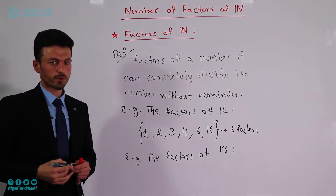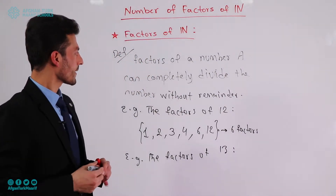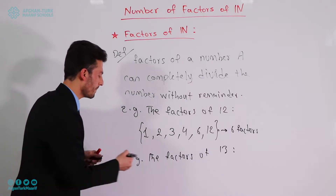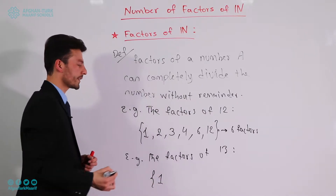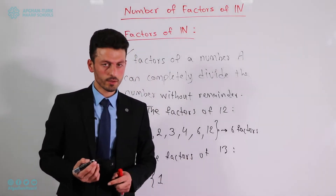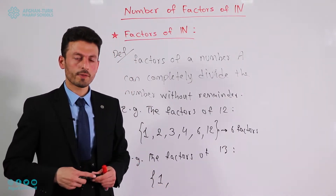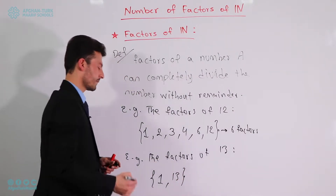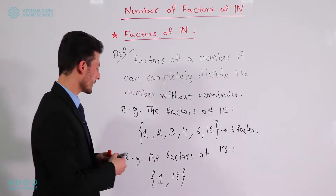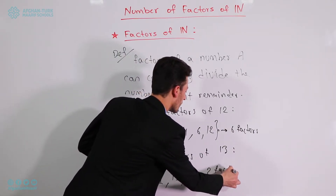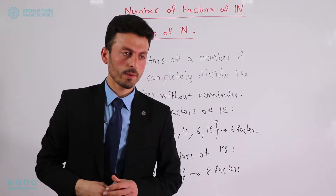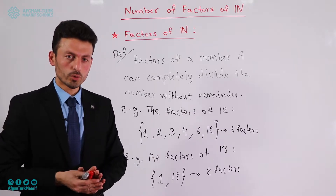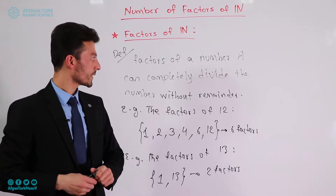Another example: what are the factors of 13? We must find which numbers can divide 13 completely. Starting from 1 — 13 is divisible by 1, since the remainder is 0. Then checking 2, 3, 4, 5, 6, 7 up to 12, none of them divide 13 completely. So only 1 and 13 are factors of 13 — it has just 2 factors. Numbers with only 2 factors are called prime numbers, so 13 is a prime number. Numbers with more than 2 factors are composite numbers, and 12 is a composite number.